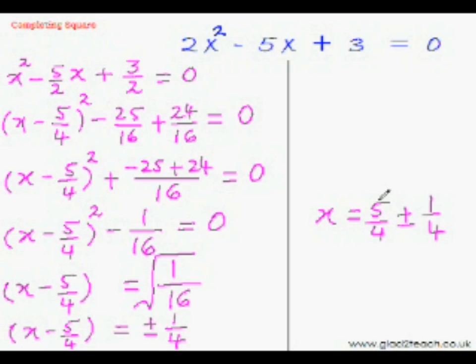So now just add these fractions and thankfully the denominators are already equal. So we will have x equal to 5 plus minus 1. So now we can separate these two roots. So one root will be x equal to 5 plus 1 over 4, 5 plus 1 is 6 over 4. And the other root would be 5 minus 1 over 4, 5 minus 1 is 4 over 4.